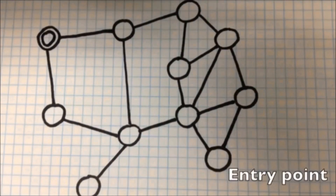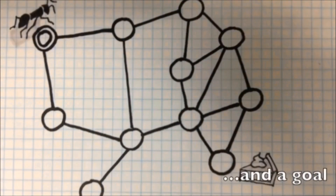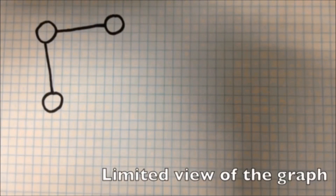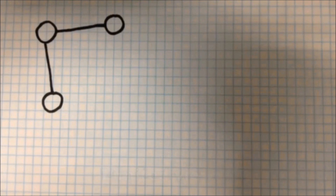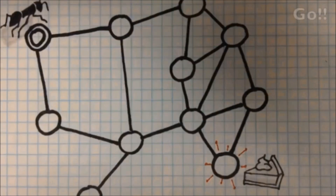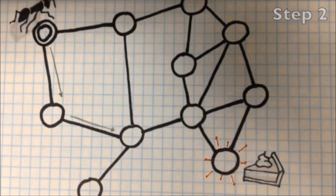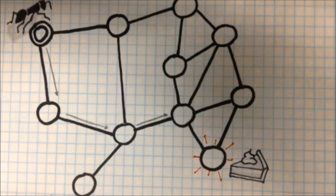Let's start with a graph, our starting point, and an ant. An ant has no real conception of what a graph is and only has a limited field of view — it can only see the path available to it along the way. As the ant moves between nodes, it leaves a trail of pheromones, depicted here with arrows on the graph edges. At each node, the ant faces a decision and with some random chance makes its selection.